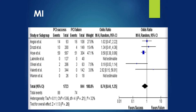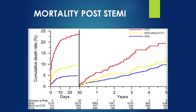Future events can be reduced with CTO PCI. Mortality post-MI can yield significant difference between patients with CTO versus none. In one study, the red line represents CTO patients, the yellow line represents multivessel disease without CTO, and the blue line represents single-vessel disease. Both patients with multivessel disease without CTO and single-vessel disease had significantly better long-term outcomes when compared to CTO patients.